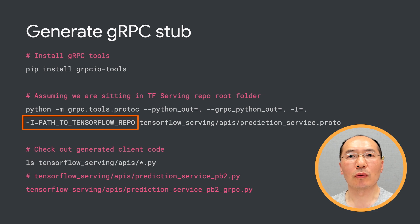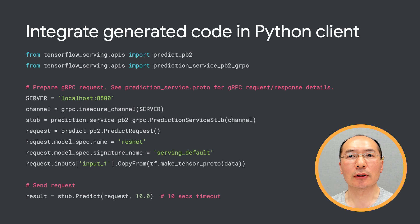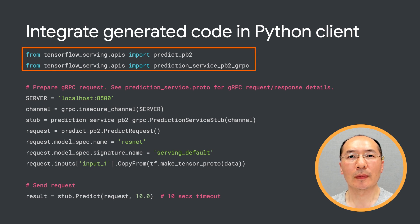If you want to regenerate the client stub code yourself, you can install the gRPCIO tools package first and run the command to do so. Make sure you clone the TensorFlow repository as well, since we depend on some protos from TensorFlow. After the client stub code is generated, we can import them and create a gRPC request. I highly recommend reading the gRPC documentation to learn more, if you are going beyond Python and C++.